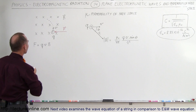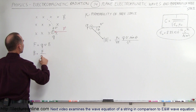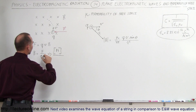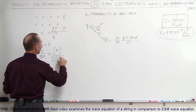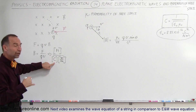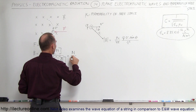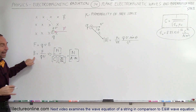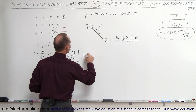First, we solve for B: B equals force divided by Q times V. The units for force are Newtons, the units for charge are Coulombs, and the units for velocity are meters per second. Coulombs per second is current, so Coulombs per second equals Amps — giving us Newtons divided by Amps times meters. That is the unit of magnetic field strength, which is given the unit of Teslas (T).